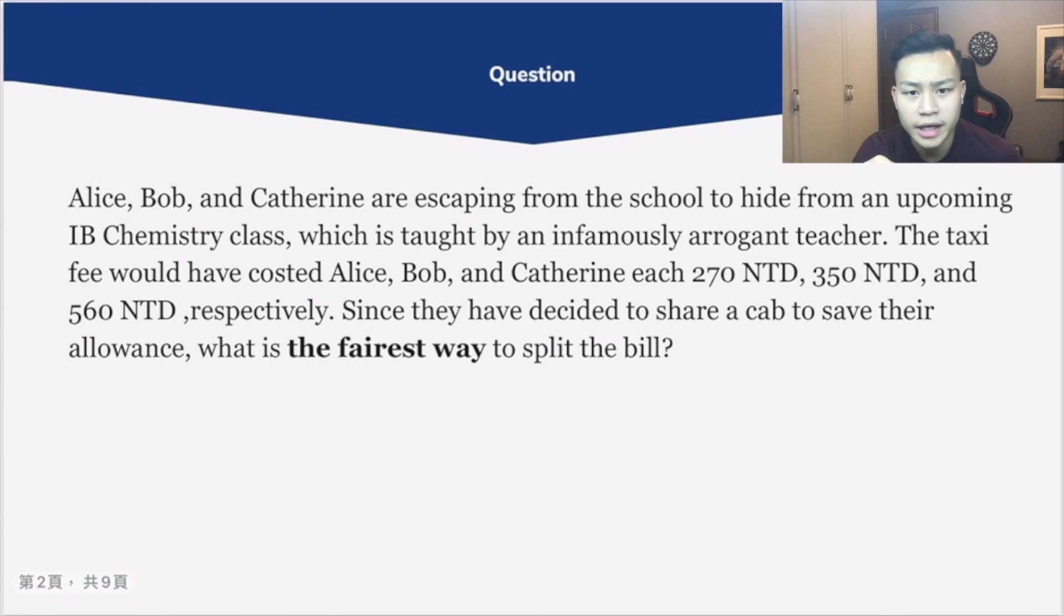Suppose Alice, Bob, and Catherine are escaping from school to hide from an upcoming AP chemistry class, which is taught by an infamously arrogant teacher. The taxi fee would have cost Alice, Bob, and Catherine each 270 NTD, 350 NTD, and 560 NTD respectively. Since they have decided to share a cab and save their allowance, what would be the fairest way to split this bill?